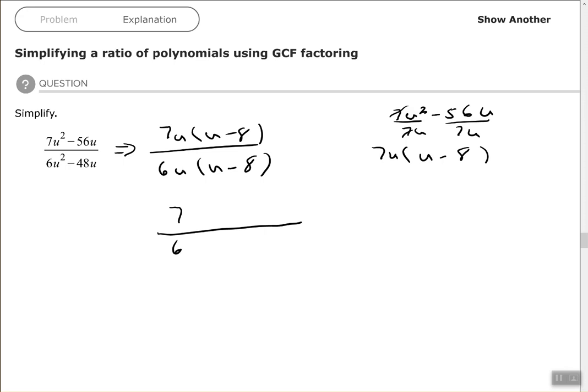The u's can be simplified. They are the same, so they cancel each other out. And then the u minus 8 are the same, so they cancel each other out. So we just end up with the fraction with remaining 7 over 6.